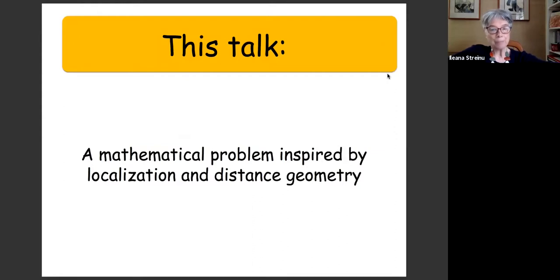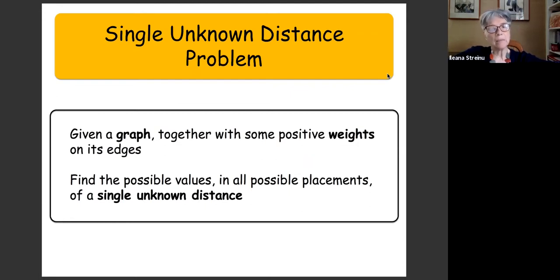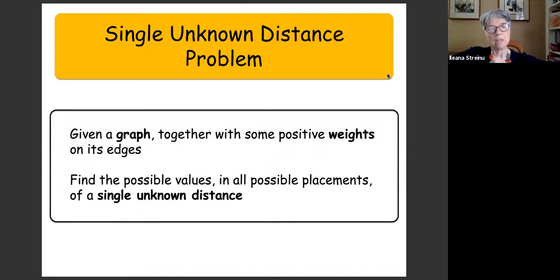This problem is in fact a mathematical problem inspired by localization and distance geometry — it's not about distance geometry per se. Let me do one more step before getting there. I'm going to talk about the simplified version: the single unknown distance problem. Again, we are given a graph and some positive weights on the edges, but we don't want to find all the coordinates of all the points — we just want to find the possible values in all possible placements of a single unknown distance.